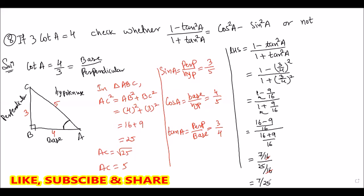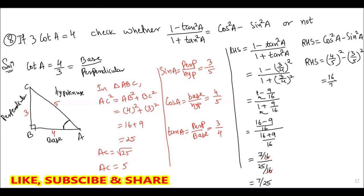Now the RHS is cos²A - sin²A. cos A = 4/5, so cos²A = 16/25. sin A = 3/5, so sin²A = 9/25. Taking LCM 25: 16/25 - 9/25 = 7/25. So LHS = RHS = 7/25. Hence proved.